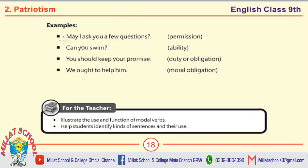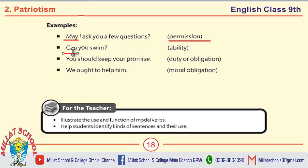Here are some examples of modal verbs. For permission: May I ask you a few questions? — Here we use may for permission. For ability: Can you swim? — The modal verb can is used. For duty and obligation: You should keep your promise — should is used. For moral obligation: We ought to help him.